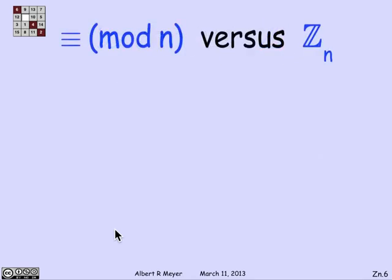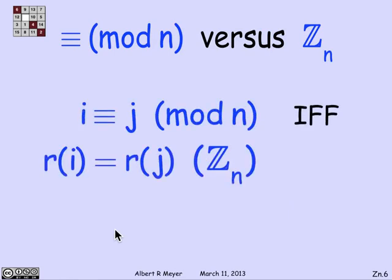What's the connection between equivalence mod n or congruence mod n and Z_n? It's fairly simple. In Z_n, we convert congruences into equalities. So i is congruent to j mod n if and only if r(i) is equal to r(j) in Z_n. This is just a rephrasing of the fact that two numbers are congruent if and only if they have the same remainder.